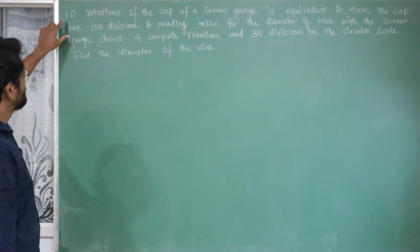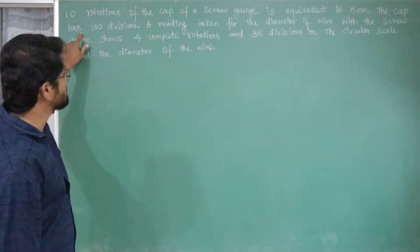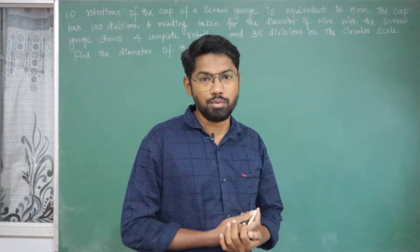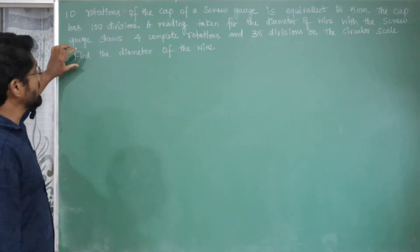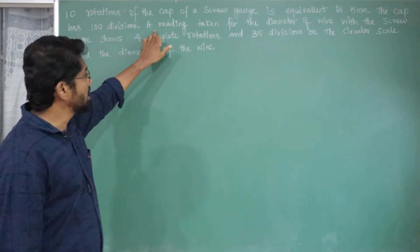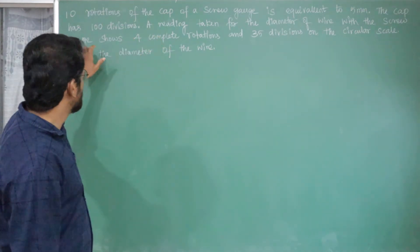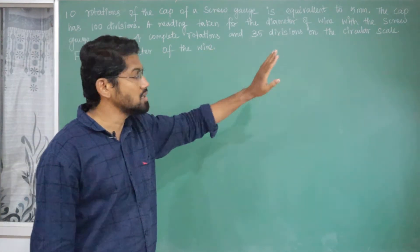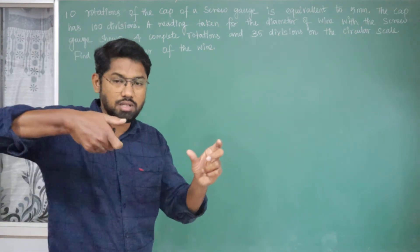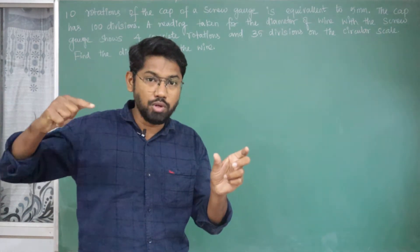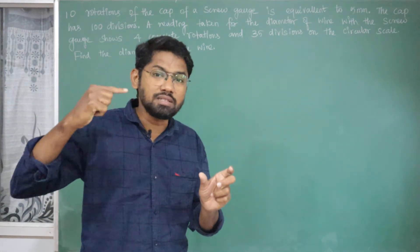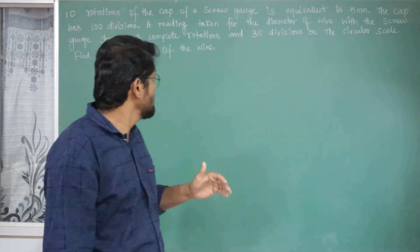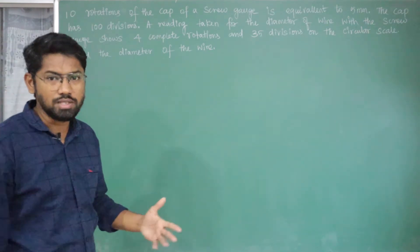So let's talk about it. From the first and second sentences, we have to calculate the least count. The reading is taken for the diameter of the wire. We have to measure the diameter in millimeters.